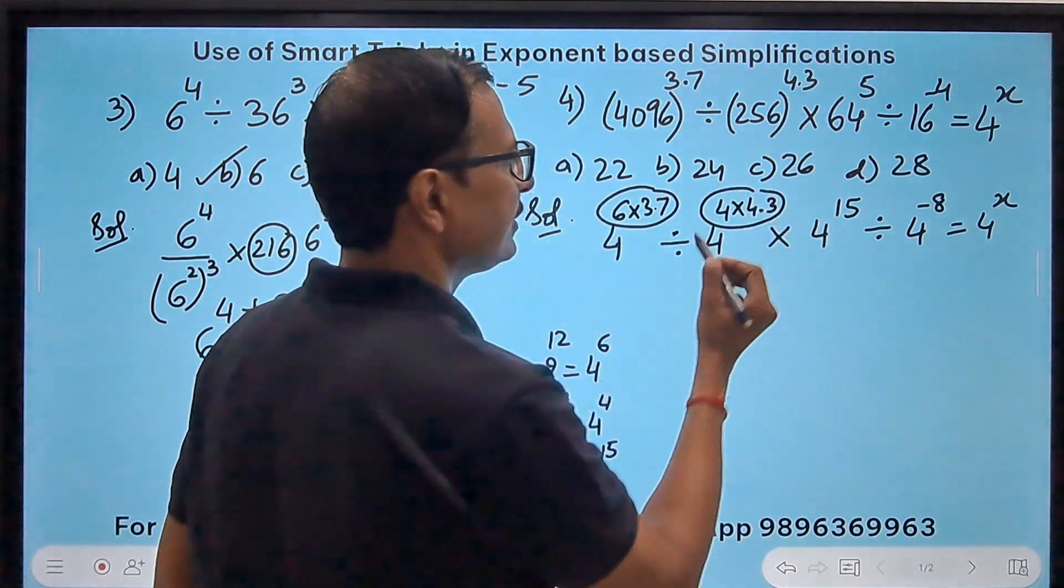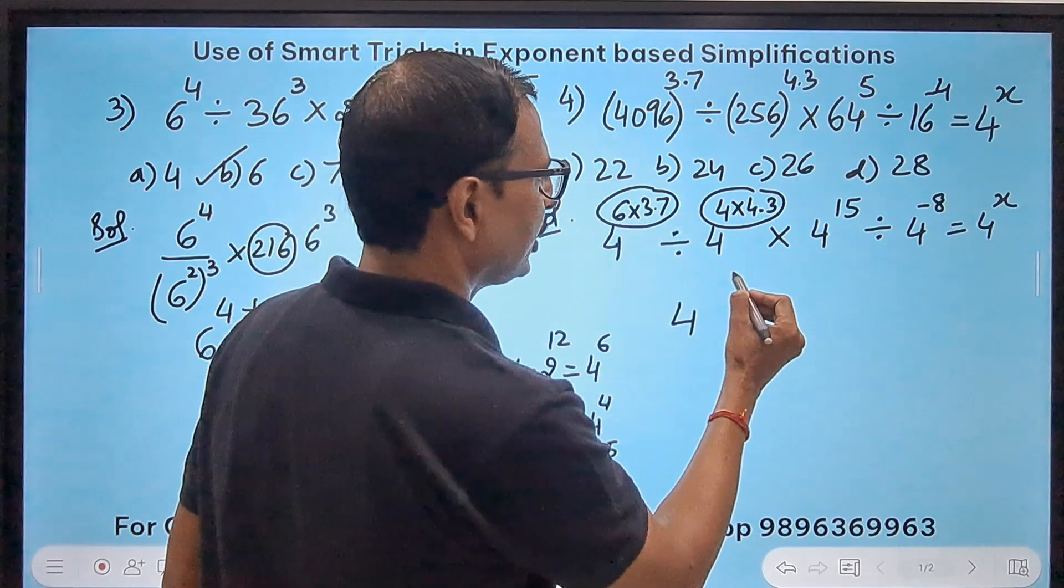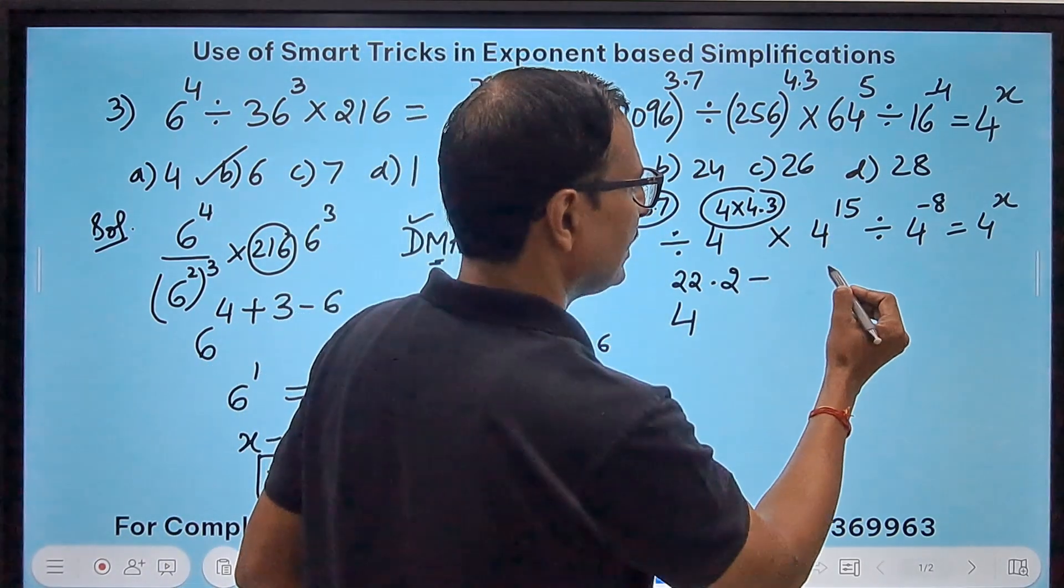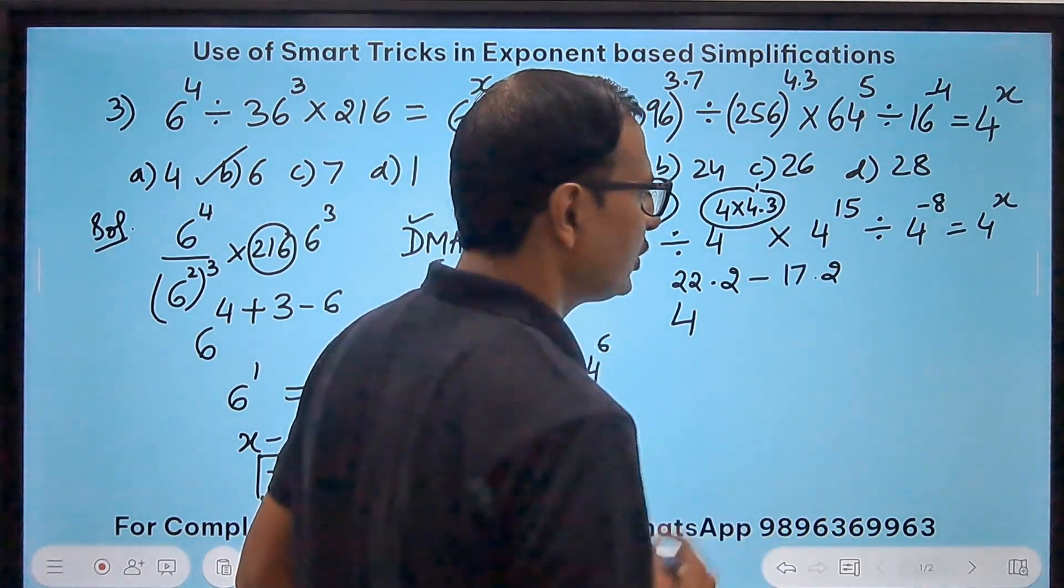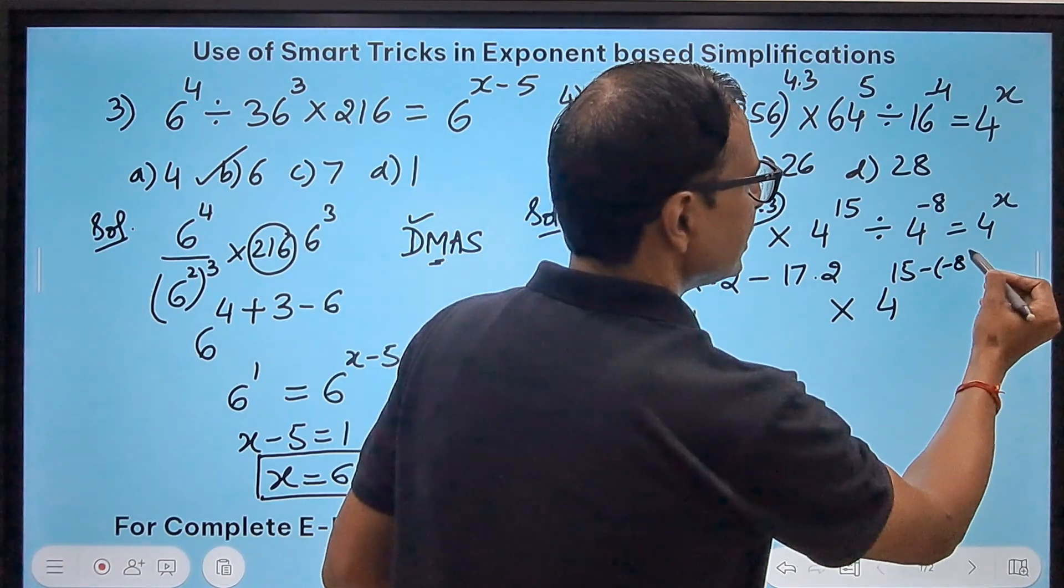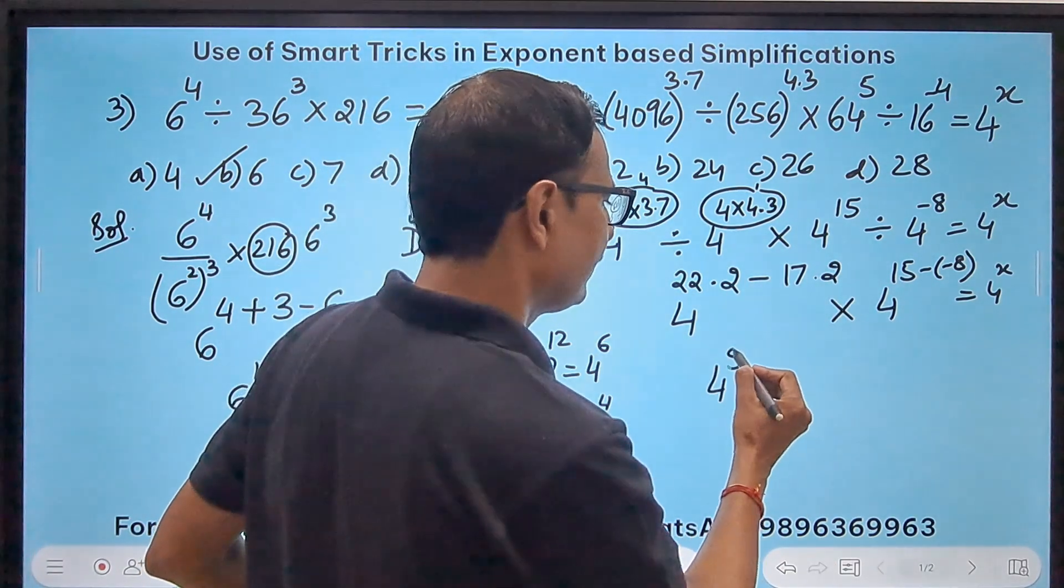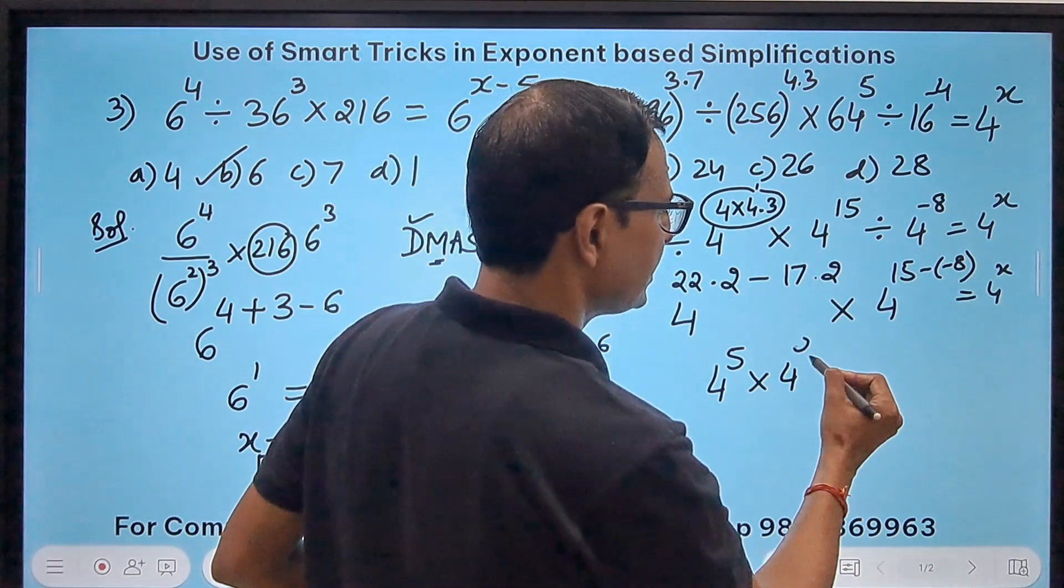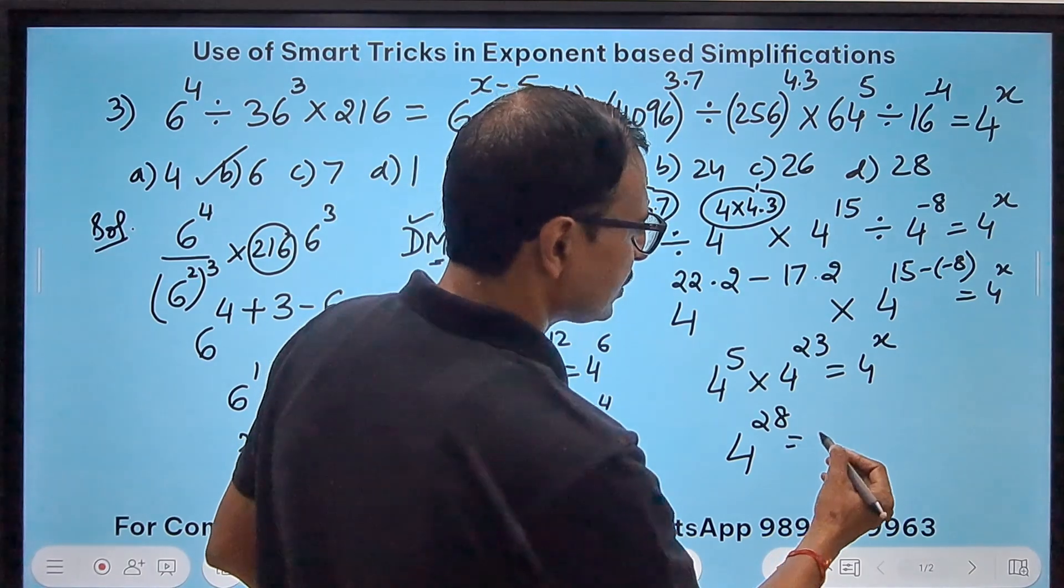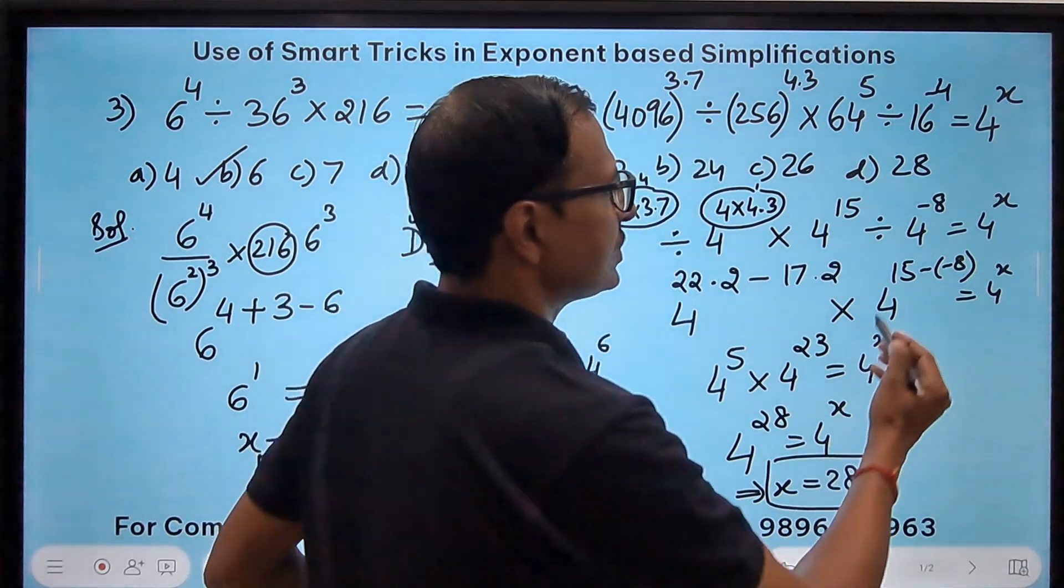So 4 raised to power, 6×7=42, 4 carry means 6×3=18, 22. So 22.2 - 4×3=12, 2, 1 carry means 17, 17.2, that is the first part, multiplied by 4^15 minus -8 equals 4^x. So 22.2-17.2 is 5. So 4^5 times 4^(15+8=23) equals 4^x and the next step will have your answer. 4^(5+23=28) is equal to 4^x gives us x as 28, and that is the answer for the question which is option number d.